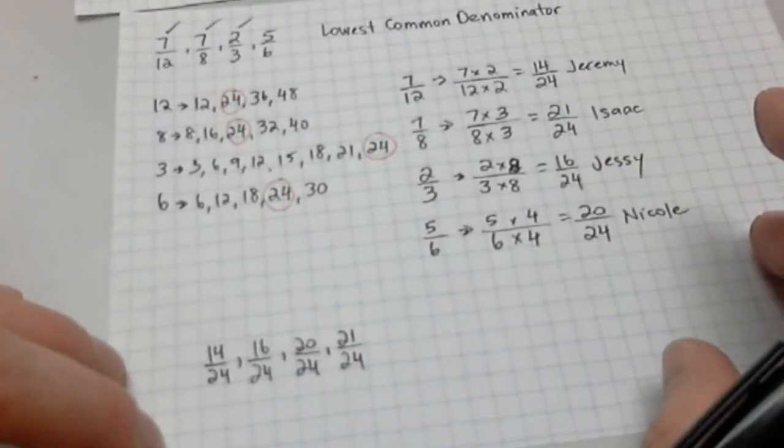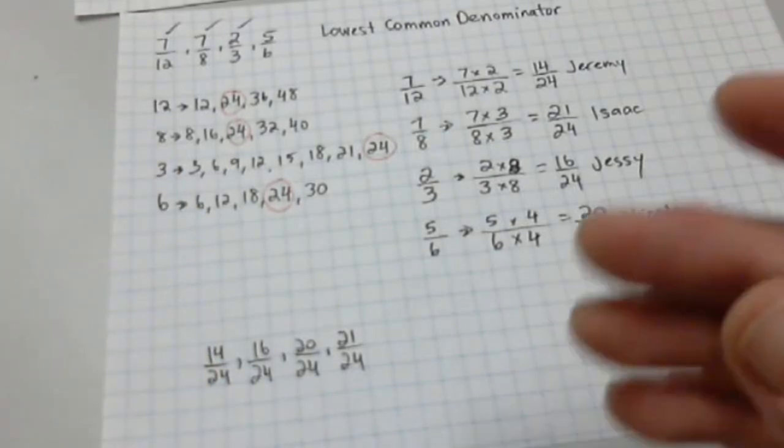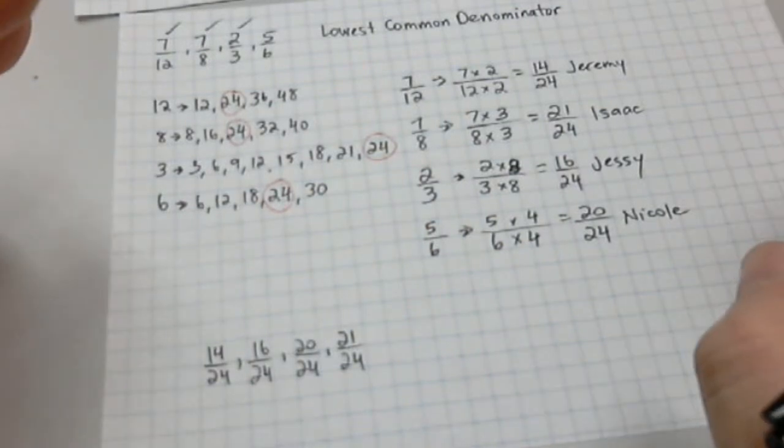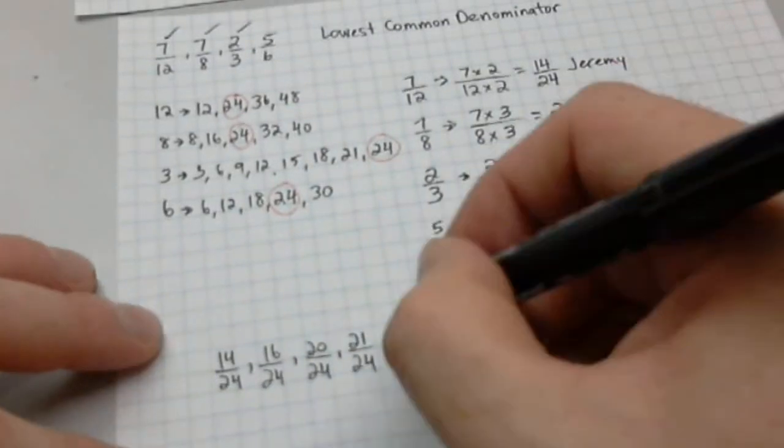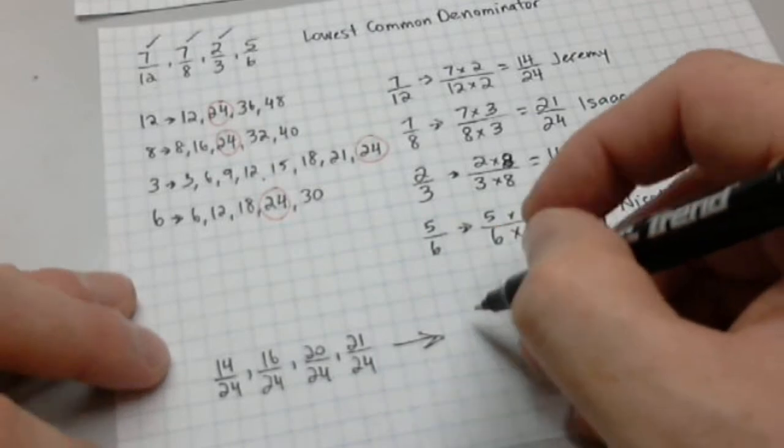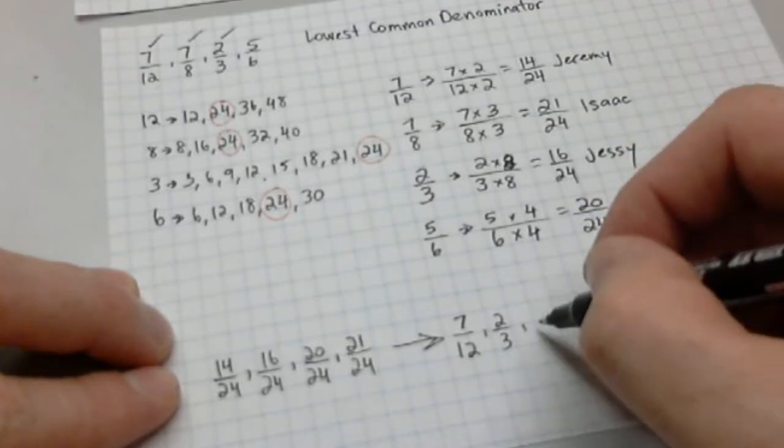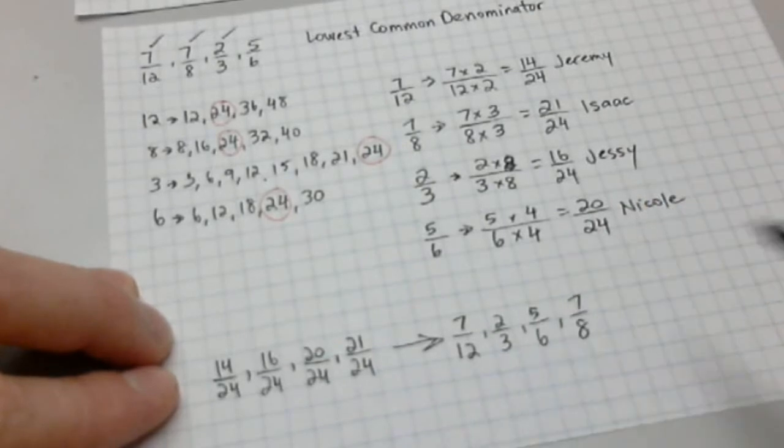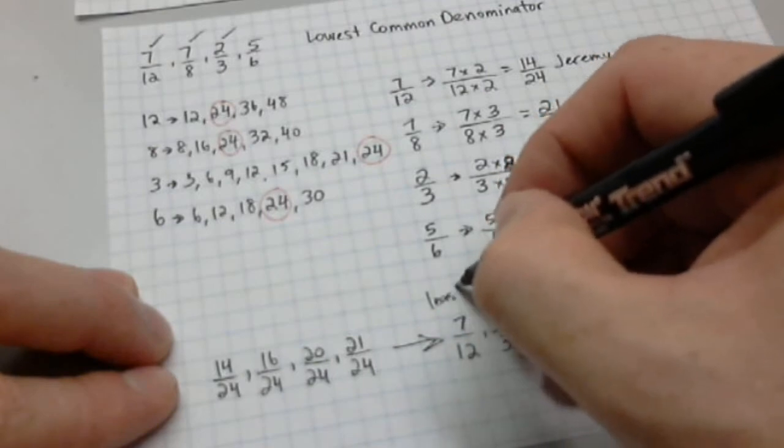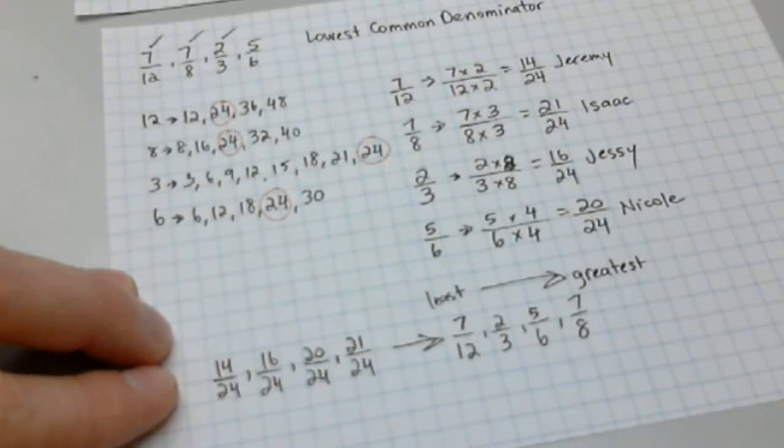That's how the lowest common denominator works. You're going to need to become really familiar and comfortable with figuring out lowest common denominators because if you want to be able to add and subtract fractions, you have to know how to do that. Now, we've written it like this. What I would ultimately like is if we headed back to the original form. So, putting it in order, we have 7/12, then 2/3, then 5/6, and then 7/8. So, that's from least to greatest.